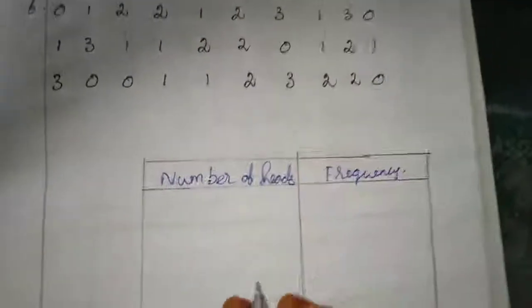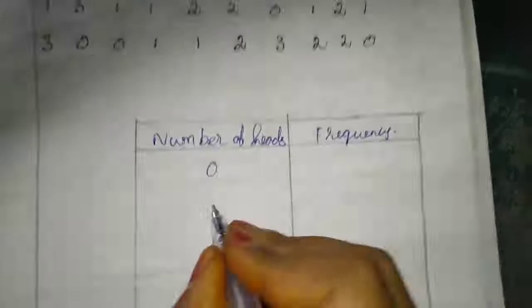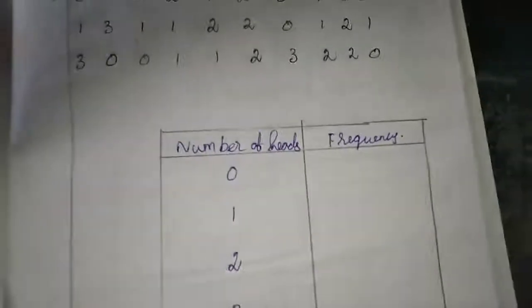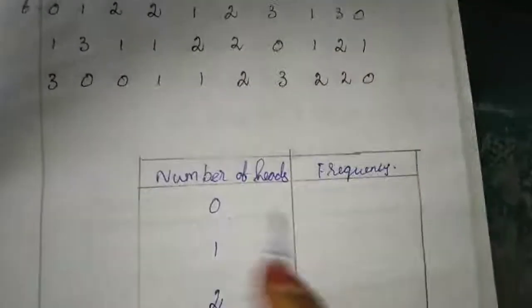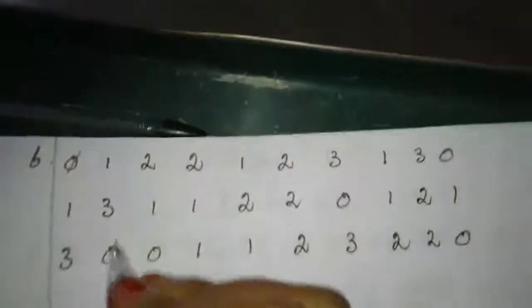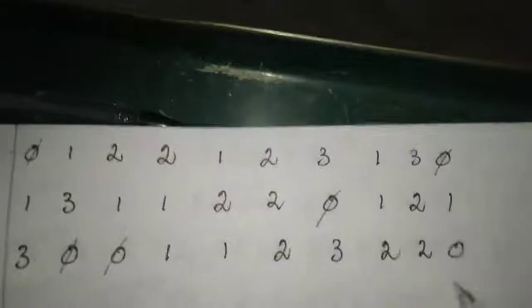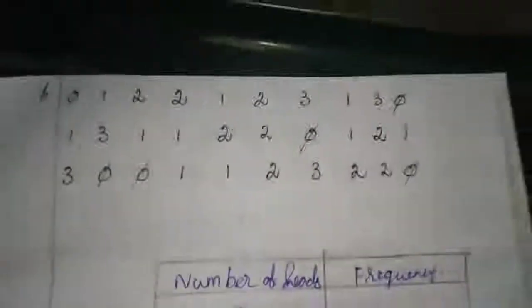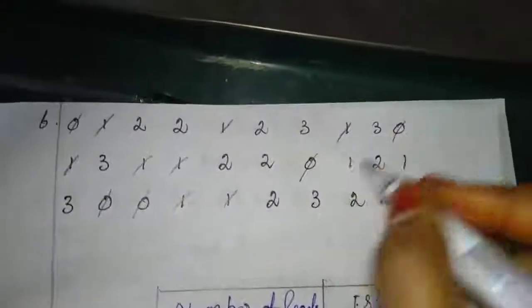I wrote the data here. Number of heads: 0, 1, 2, and 3. Now I am referring the data. Here it will not come as intervals because 0 means 0 only, not 0 to 1. So I am referring how many zeros we have: 1, 2, 3, 4, 5, 6 zeros. Again 1: 1, 2, 3, 4, 5, 6, 7, 8, 9, 10, so 1 we have 10 times.